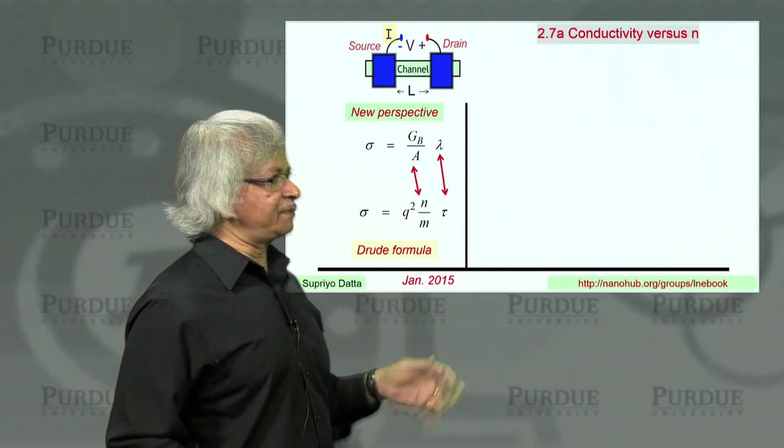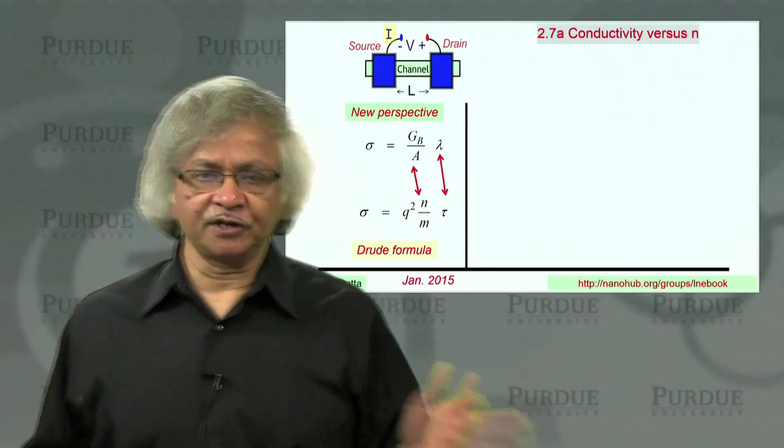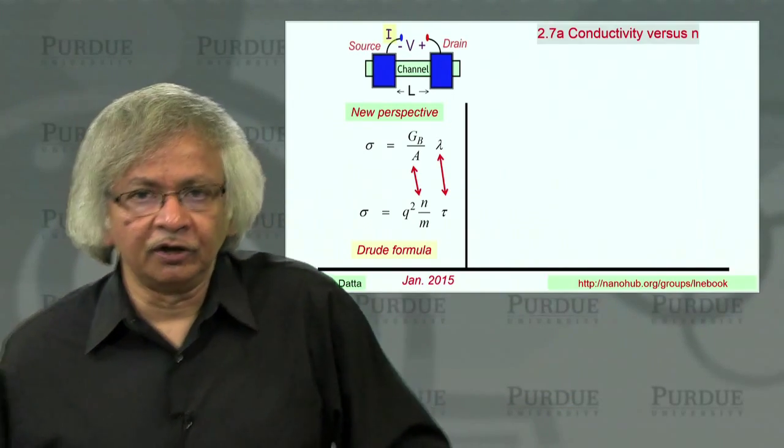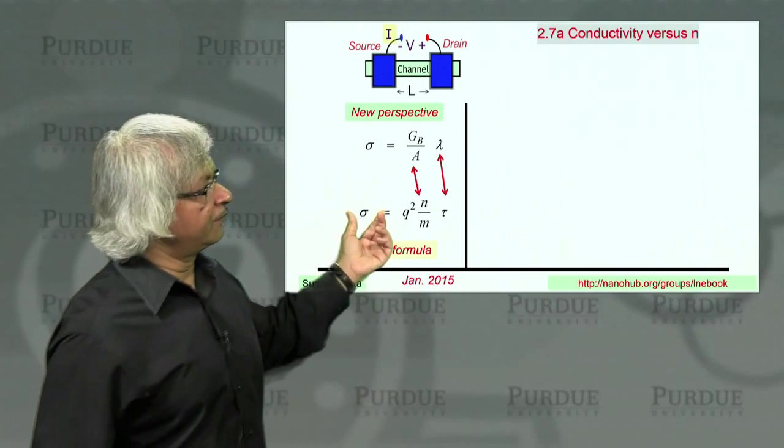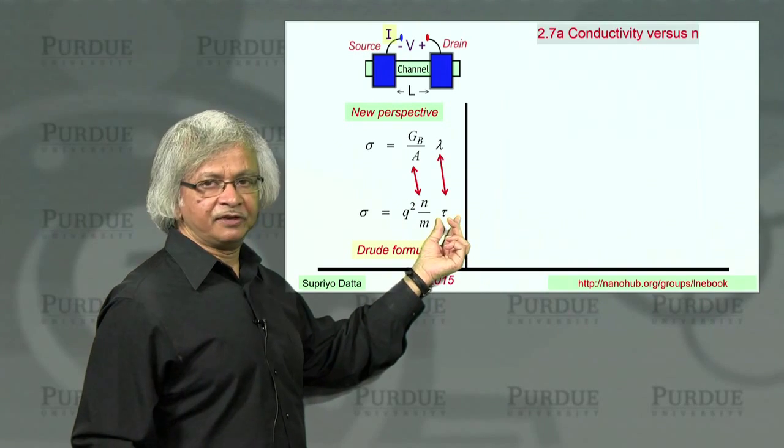On the other hand, the old perspective or the one that you'll see in all textbooks, in freshman physics texts, most books will start with it, is the Drude formula. And the Drude formula relates conductivity to electron density, effective mass, and this mean-free time.